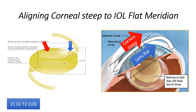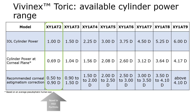Most toric lenses — such as Envision, Acrysof, and Tecnis toric — are available in T2 to T9. T2 corrects 1 diopter of cylinder in the IOL plane, which translates to approximately 0.69 diopters on the corneal plane, because placing the IOL posteriorly reduces the effective correction at the cornea. The highest available model, T9, corrects around 6 diopters in the IOL plane but approximately 4 diopters on the corneal plane.